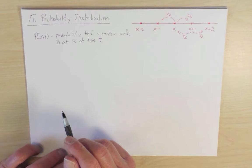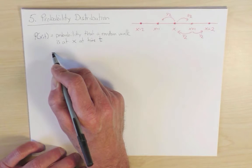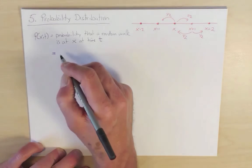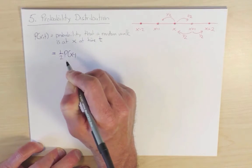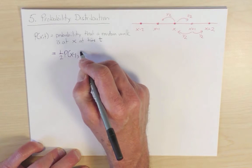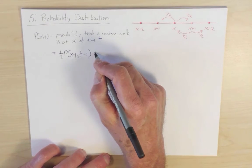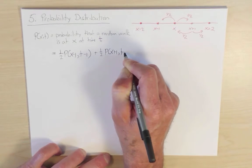There are only two ways this can occur. Either the random walk was at x minus one and it hopped to the right with probability one half, and it was at x minus one at the previous time, so there'll be one half P(x-1, t-1), and the factor one half accounts for the fact that it hops to the right with probability one half. Or the random walker was at position x plus one at the previous time step and hopped to the left.